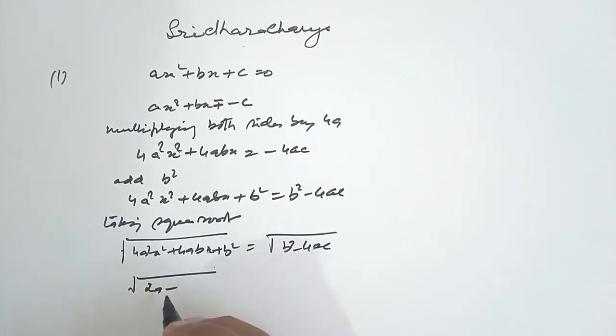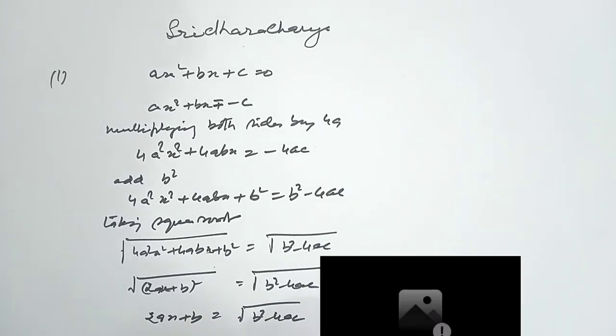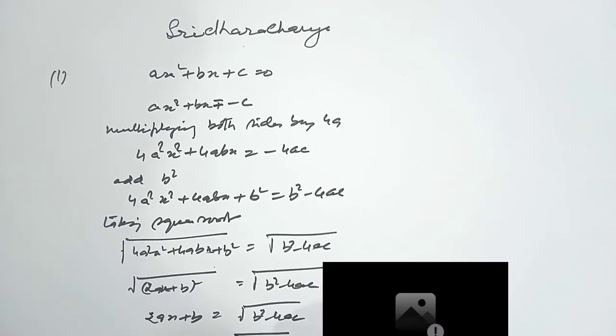2ax + b, the whole square is equal to... and so this is 2ax + b is equal to √(b² - 4ac). And so, x = (-b ± √(b² - 4ac)) / 2a.